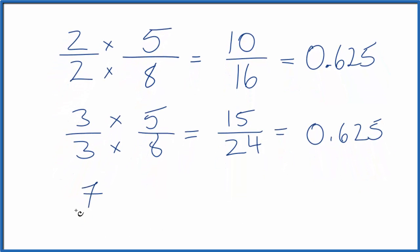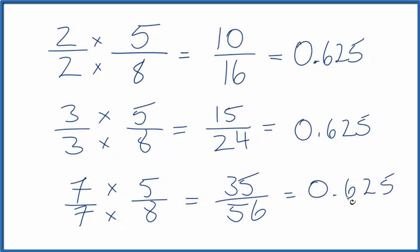One more, 7 over 7. So this gives us another equivalent fraction to 5 eighths or 10 sixteenths or 15 twenty-fourths. This is Dr. B with several equivalent fractions for 5 over 8. Thanks for watchin'.